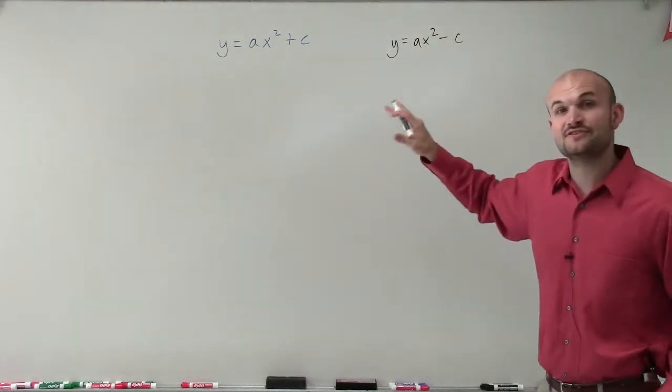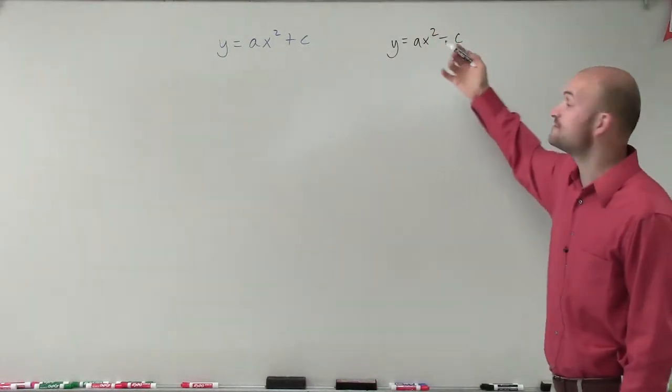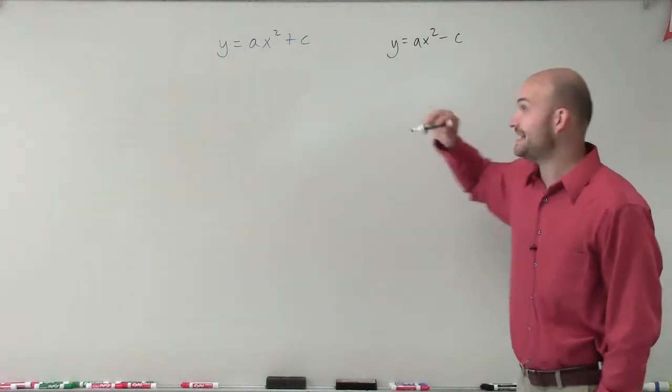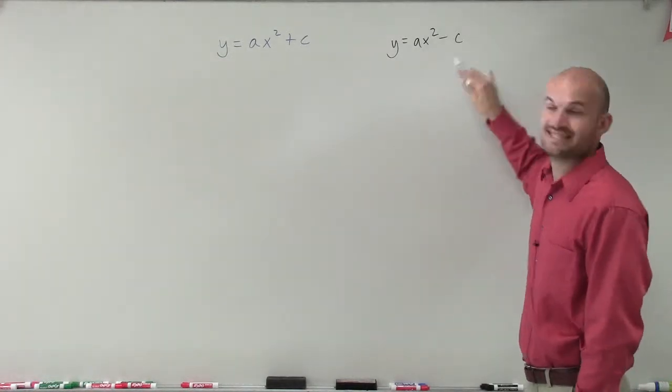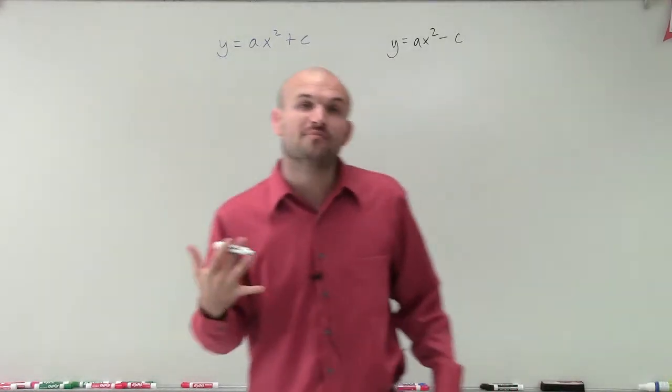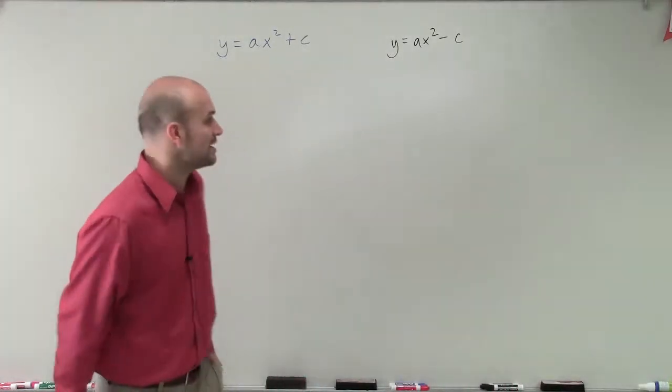we could apply the difference of two squares, factoring by the difference of two squares if and only if a was a square number and c was a square number. That was the only time we could solve by factoring using the difference of two squares.